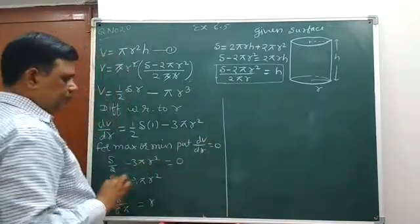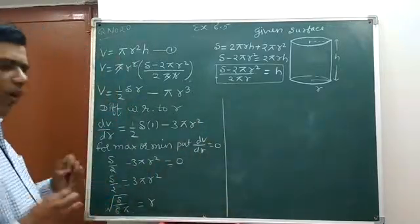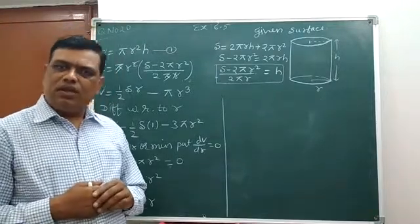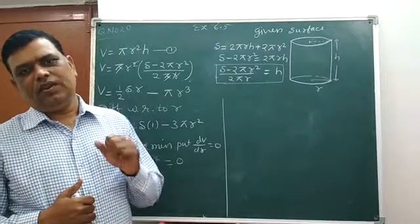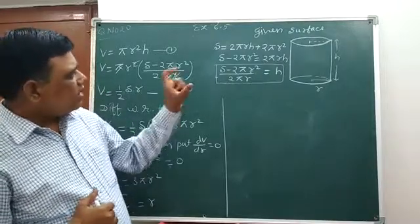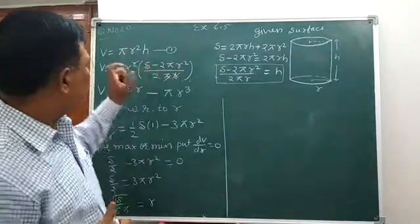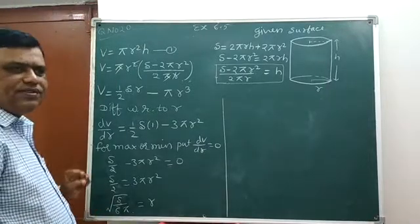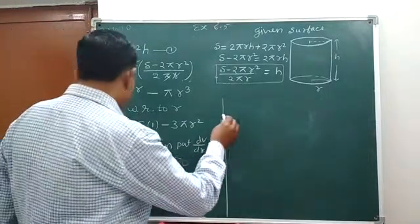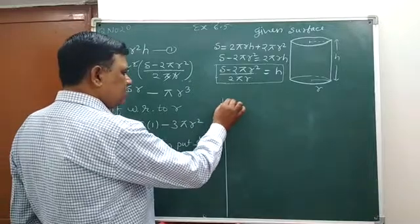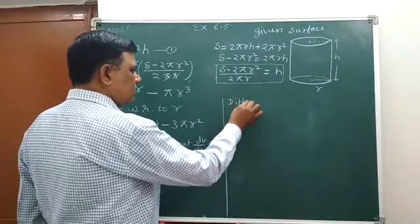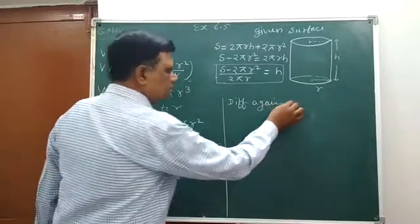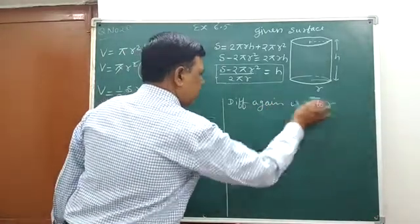At point r equals root of S upon 6π, we have to decide the volume is maximum or minimum. But our task is to prove volume is maximum at this point, so maximum we again differentiate it with respect to r.